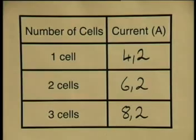Did you notice that the current increased as I increased the number of cells in the circuit? The more cells we have in series, the greater the amount of electrical energy is provided, and the current will increase. But will this relationship always be true? Are there other variables that could influence our results?